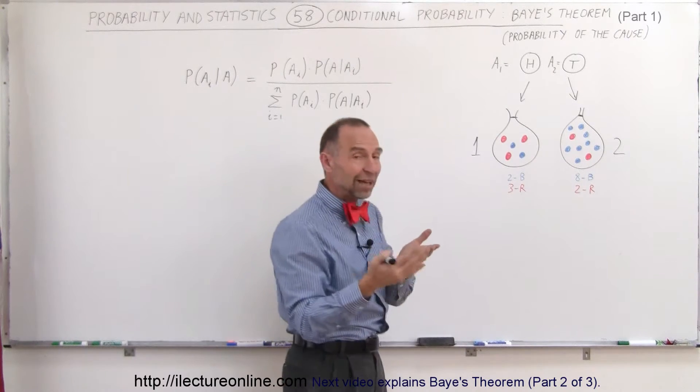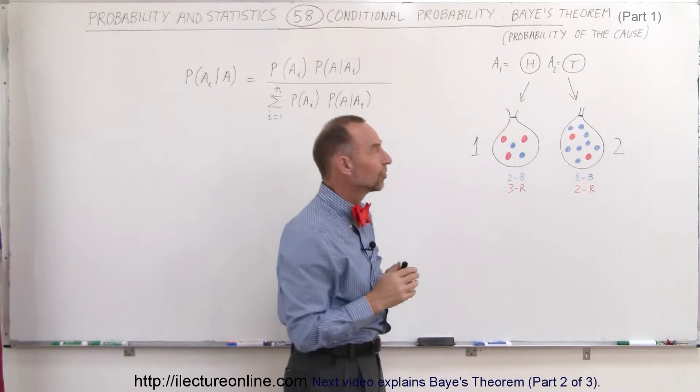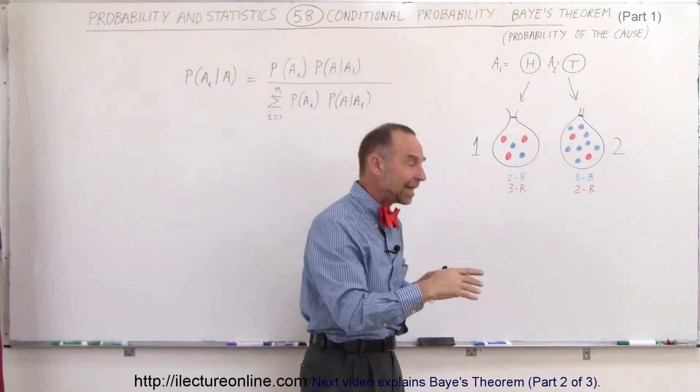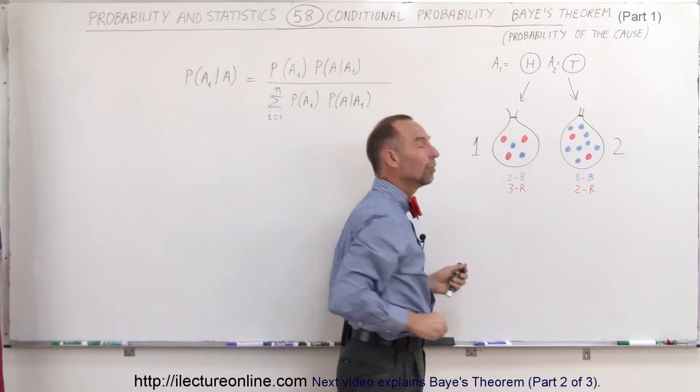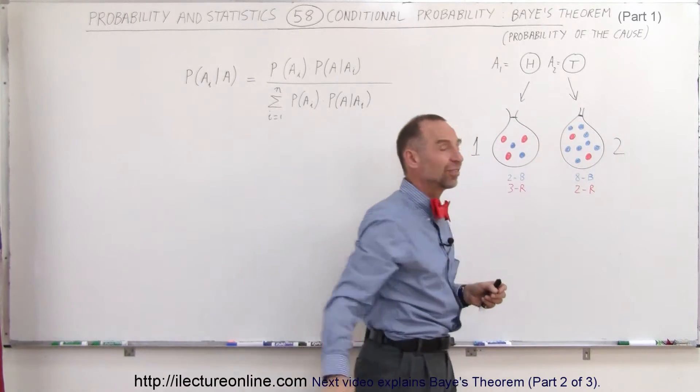And let's say that we also have a coin, and if we toss the coin, we either will have heads or tails. So, if we toss heads, we'll grab a marble from the first bag, and if we throw tails, we'll grab a marble from the second bag.